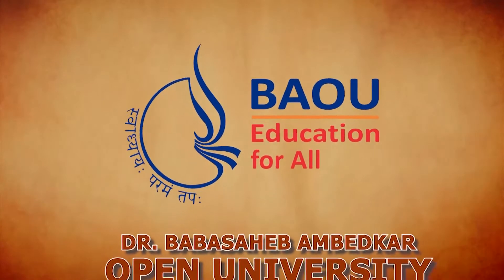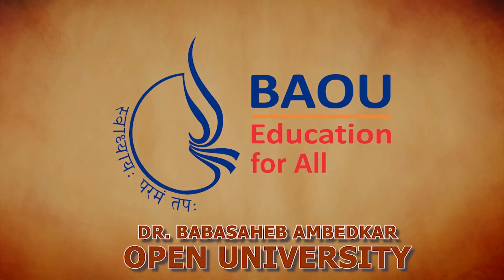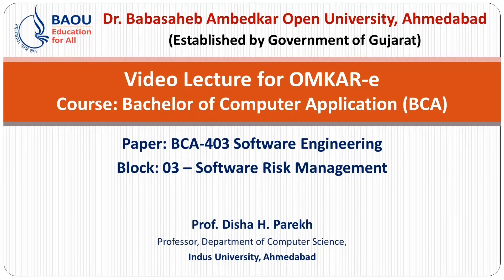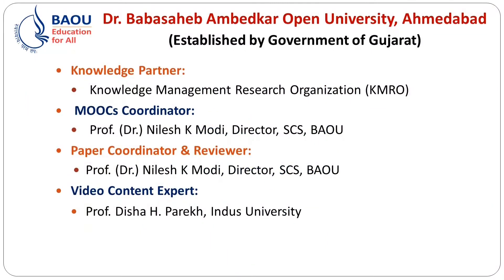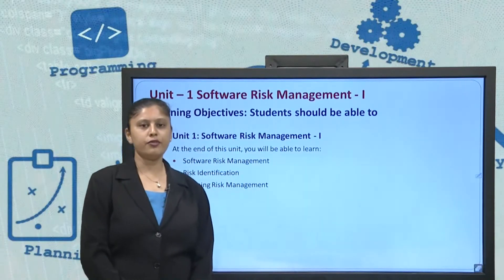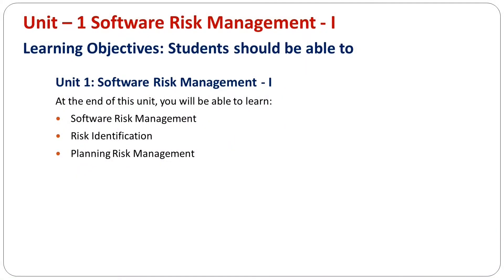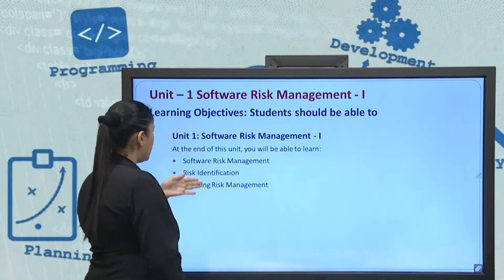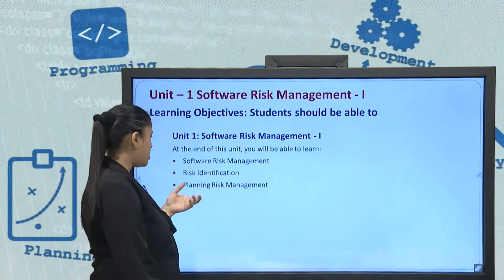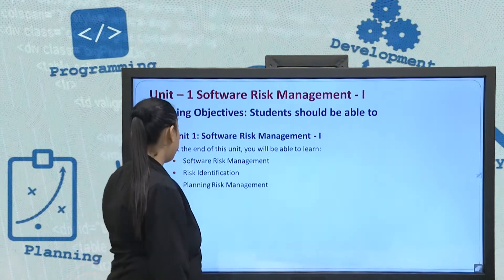Dr. Babasaheb Ambedkar Open University. Welcome again. We are here for Software Engineering Video Lectures for BCA 403. Today we will be seeing Block 3, Unit 1. Block 3 is all about Software Risk Management. In Unit 1 we will be seeing Software Risk Management 1, and Unit 2 is Software Risk Management 2. In this session, when we complete this unit, we will learn Software Risk Management, Risk Identification, and Planning the Risk Management.